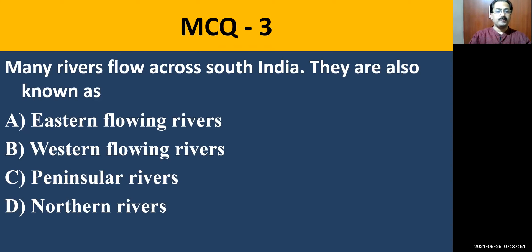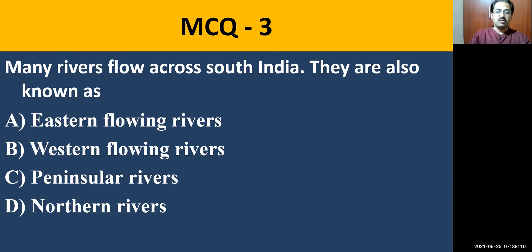MCQ question number three: Many rivers flow across South India. They are also known as — Eastern flowing rivers, Western flowing rivers, Peninsular rivers, or Northern rivers. The correct answer is Peninsular rivers, because South India is also called the Plateau of Peninsula. That is why the rivers which flow here are called Peninsular rivers.